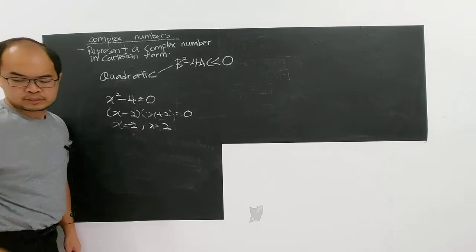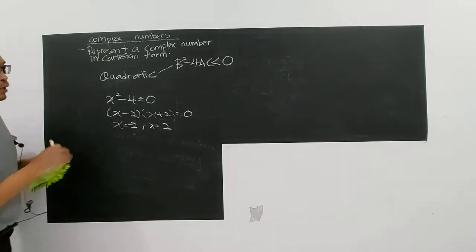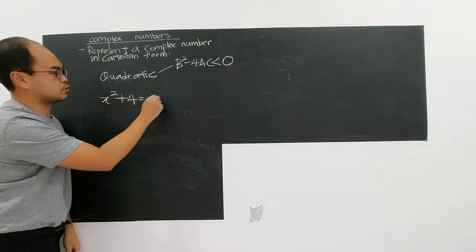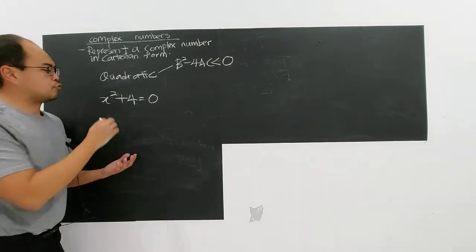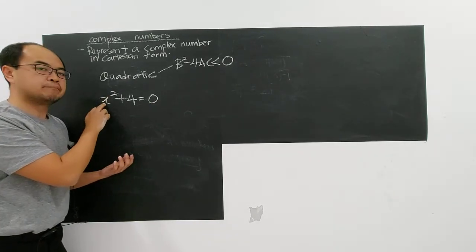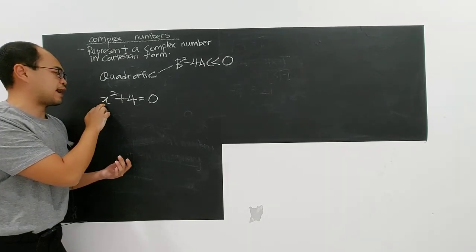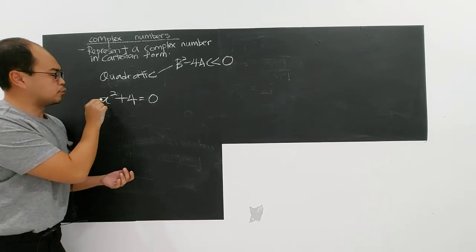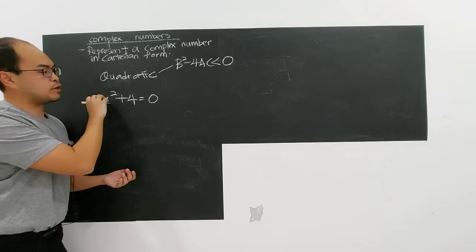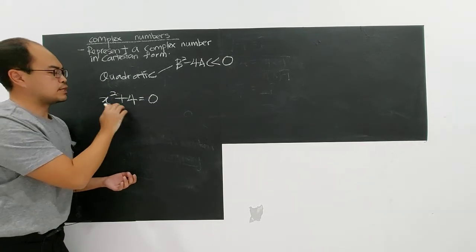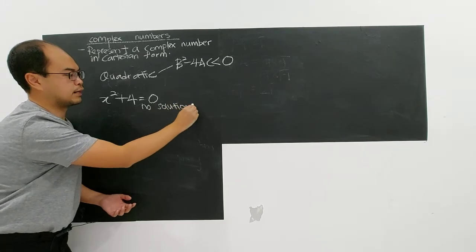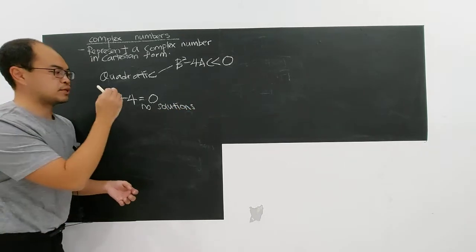But there are types of equations such as x² + 4 = 0. It is impossible to find a real number that satisfies this equation. No matter what real number you put in, negative 2 squared still gives positive, and any real number when squared gives positive, so when you add 4, it's impossible to get 0. We used to say this has no solution — no real solution.